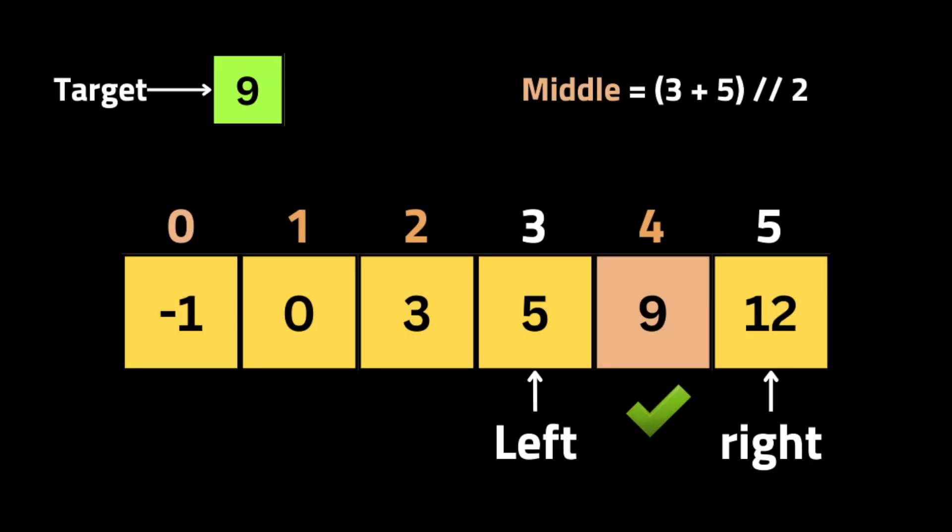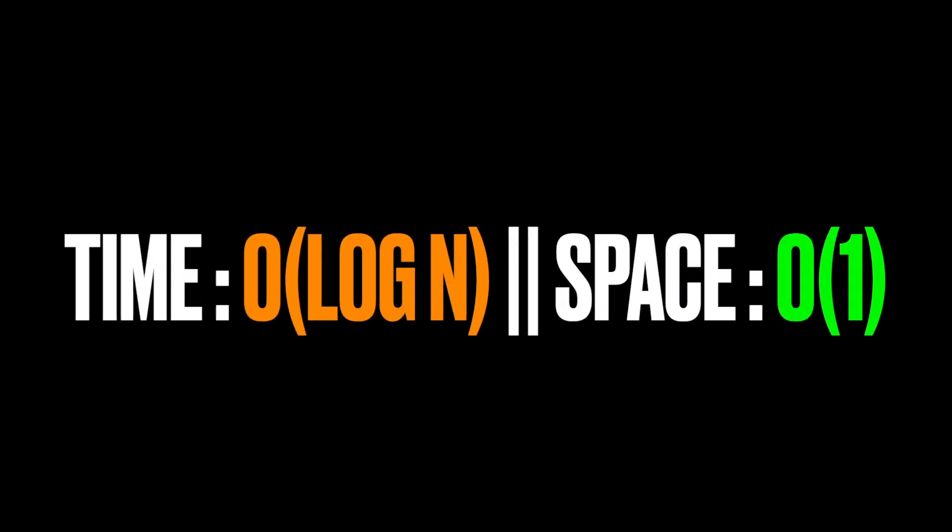So we move the left pointer to the position after the middle and keep the right pointer at the end. We compute (left + right) / 2 again, which gives us index 4. We compare the number at position 4 to the target, and since they are equal, we found the number and return its index. The time complexity for binary search is O(log n).